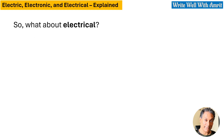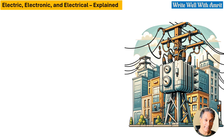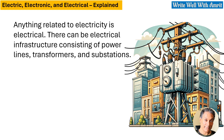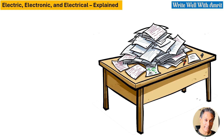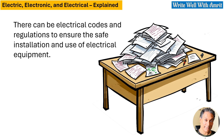So what about electrical? Anything related to electricity is electrical. There can be electrical infrastructure consisting of power lines, transformers, and substations. There can be electrical codes and regulations to ensure the safe installation and use of electrical equipment.